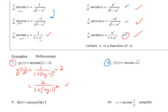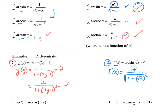Number 8: f of x equals the arc sine of √x. F prime of x equals u prime in the numerator — the derivative of √x is 1 over (2√x) — all over the square root of 1 minus u squared, where u is √x. That gives √x quantity squared equals x inside, so this simplifies to 1 over (2√x times √(1 − x)).